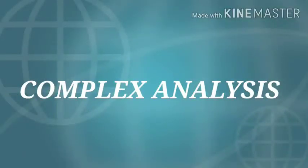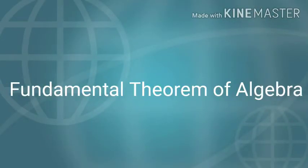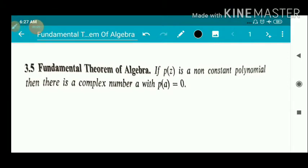Statement of the Fundamental Theorem of Algebra: if p(z) is a non-constant polynomial, then there is a complex number a with p(a) = 0. This is a very familiar, famous, and important theorem. It states that every non-constant polynomial has a zero, or root. Otherwise stated: every non-constant polynomial has at least one zero or at least one root in the set of complex numbers.